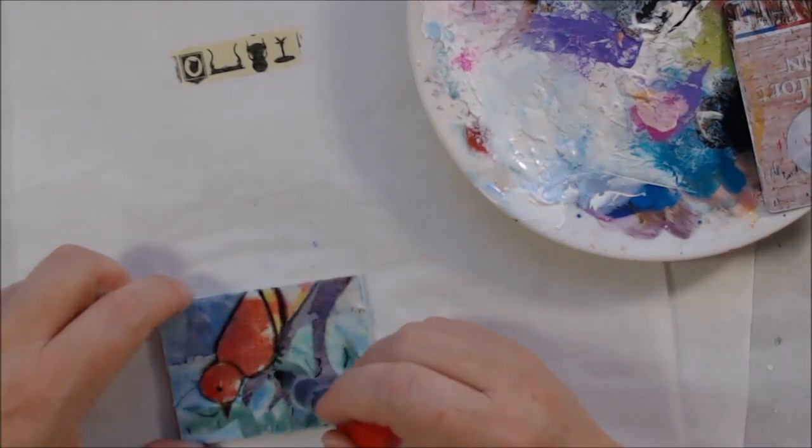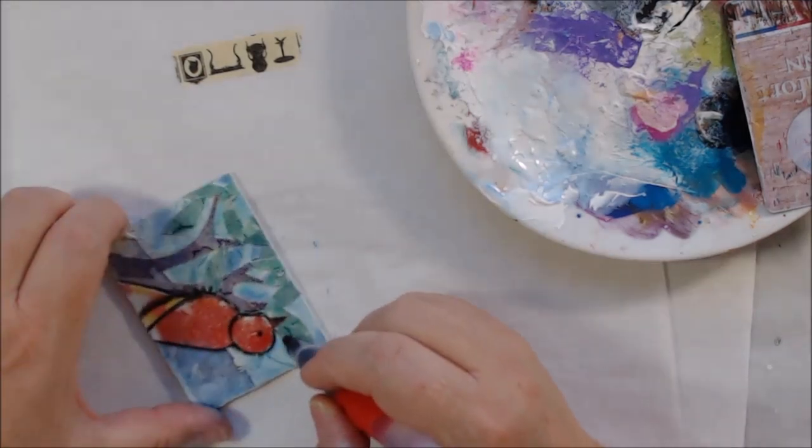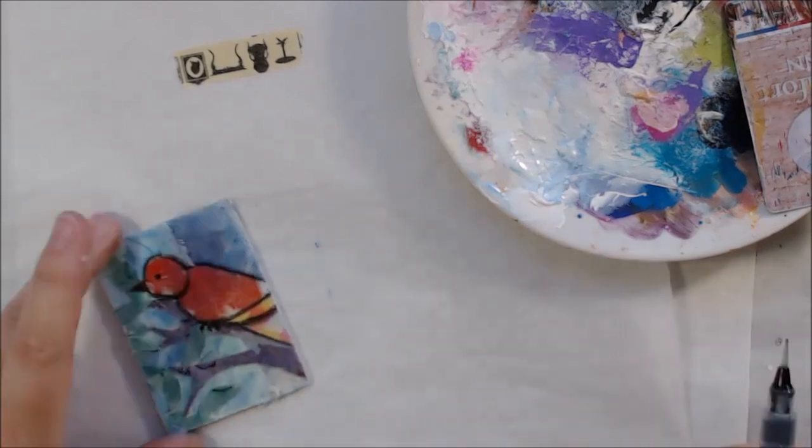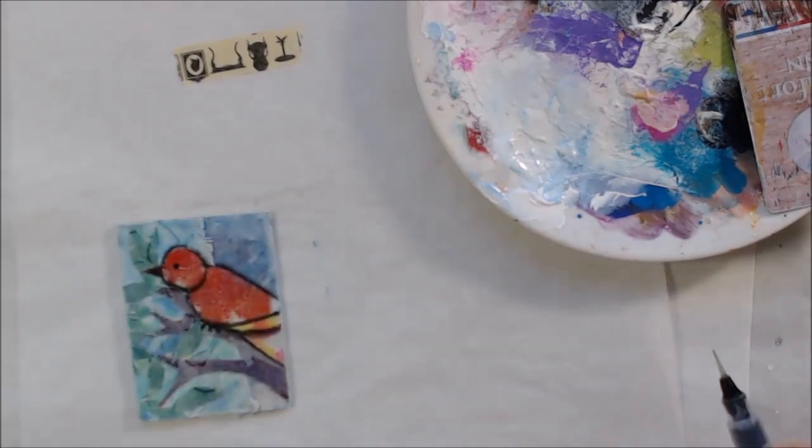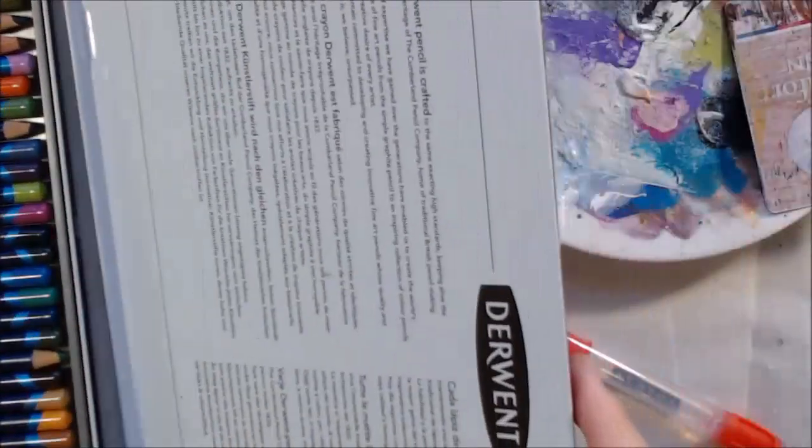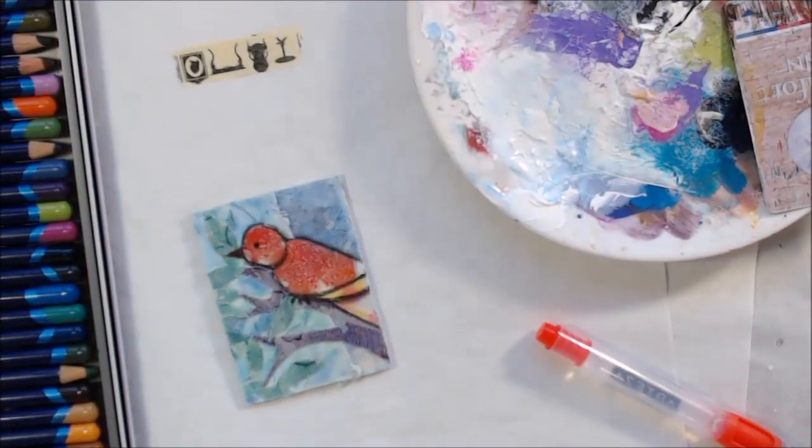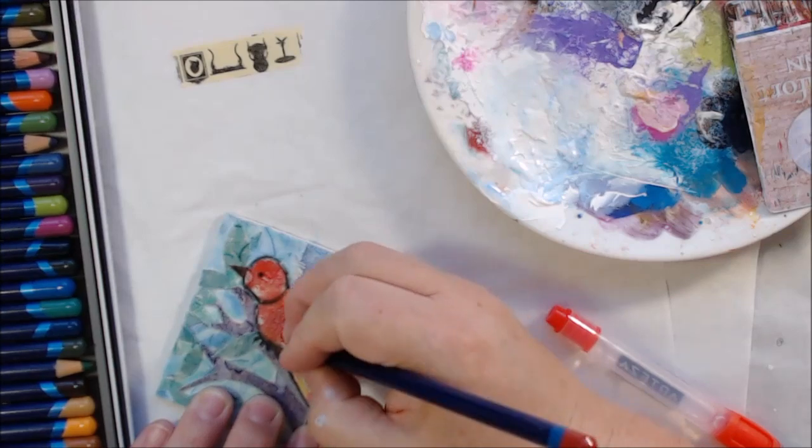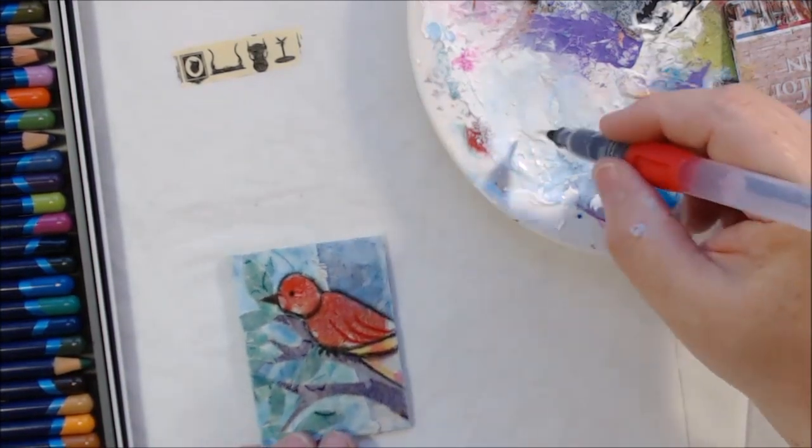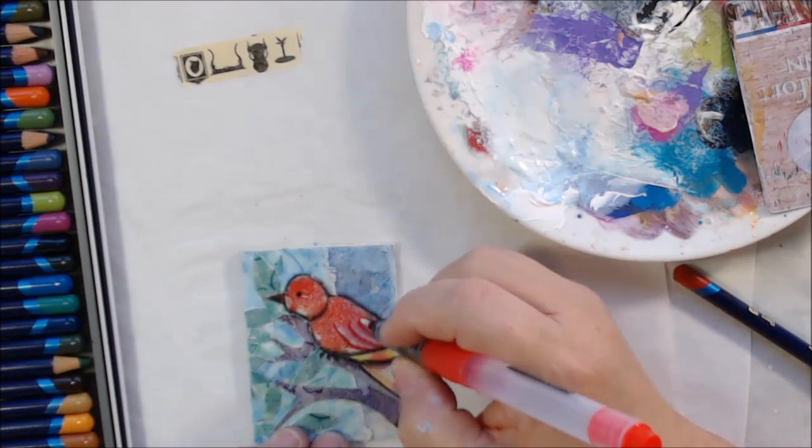Then I decided it needed more illustrative dimension, you know how I am. So I got out some pencils, this is a Stabilo All pencil, but then I switched to Inktense pencils because I remember that Inktense pencils are permanent once they're dry. They're water-soluble until you activate them with water, and then once that water has dried they're permanent.